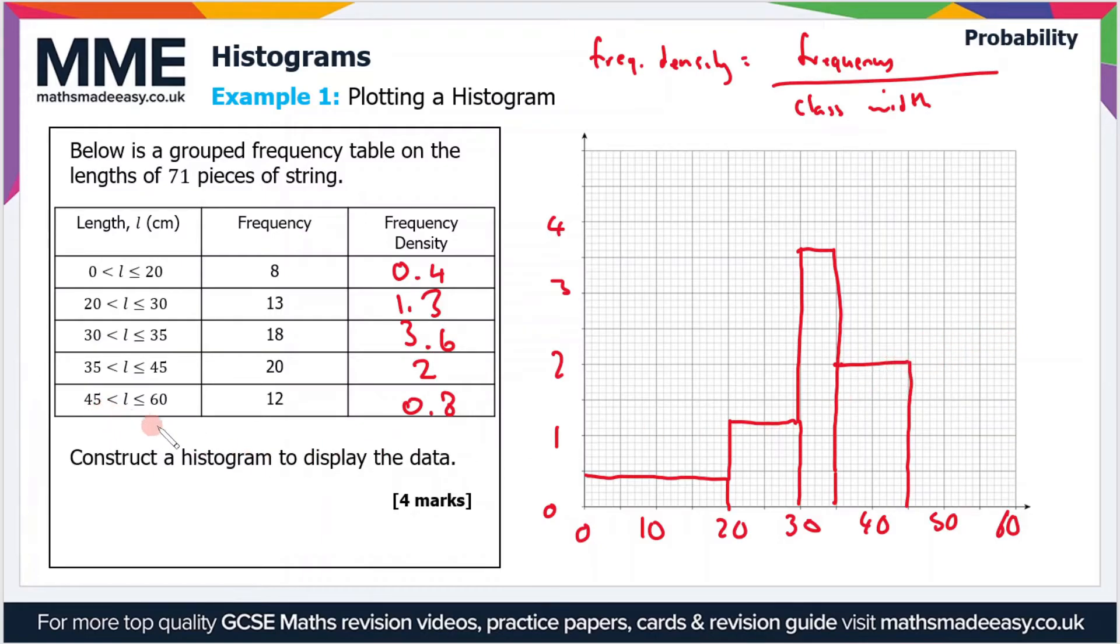Finally, the last one goes from 45 to 60, so that's got a width of 15 as it goes right to the end, and that's a frequency density of 0.8. We go right across to 60 along the line of 0.8. That's our complete histogram.